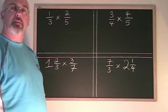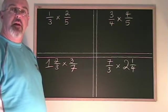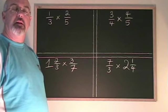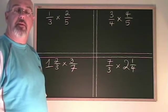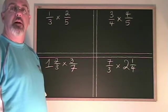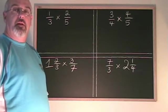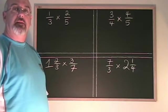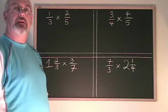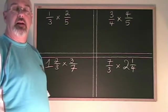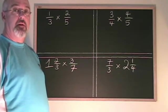Let's take a look at multiplying fractions. When we multiply fractions, if both fractions are in the form of an improper fraction — not mixed numbers — then we can just multiply the numerators to get our new numerator, and multiply the denominators to get our new denominator. That's the answer. We may have to reduce the answer.